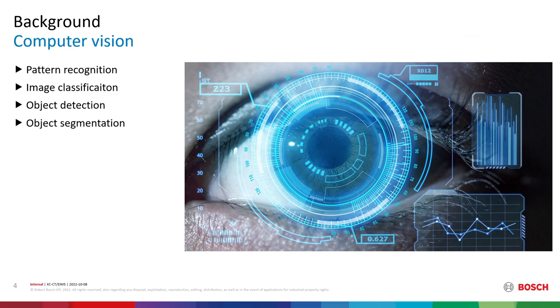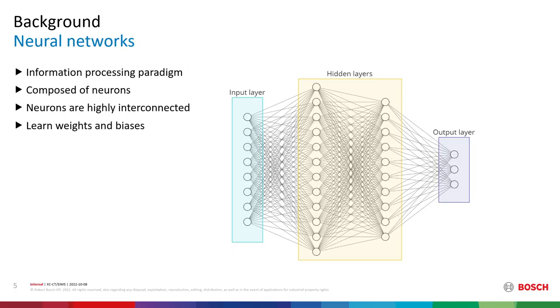This problem belongs to the computer vision domain. Computer vision problems include pattern recognition, image classification, object detection and object segmentation. The most advanced computer vision techniques include machine learning and neural networks. Neural networks are an information processing paradigm. Their basic building blocks are neurons. The neurons are highly interconnected via directed edges. Each neuron receives its input, processes it and sends its output to its connected neurons. Through the training process, each neuron learns the weights and biases for its input. Therefore, it is able to interpret and process complex patterns in its input data.